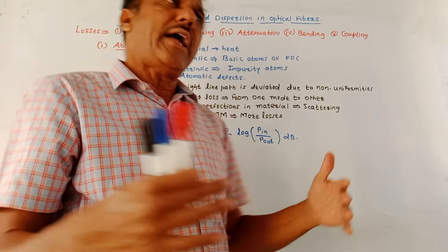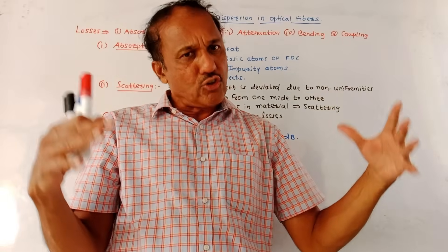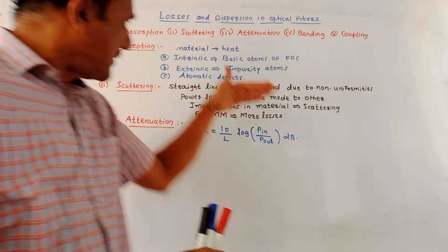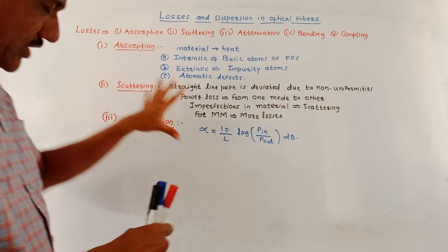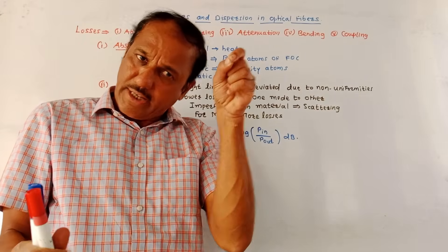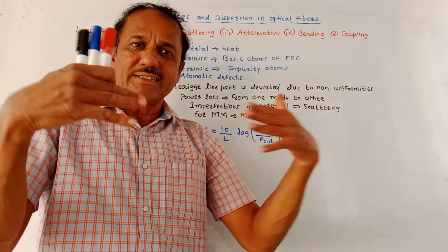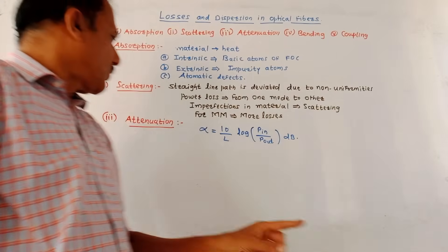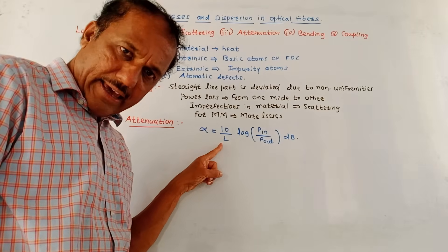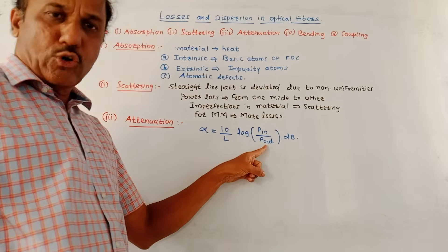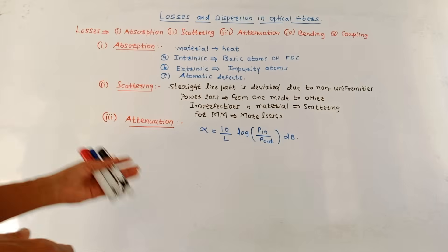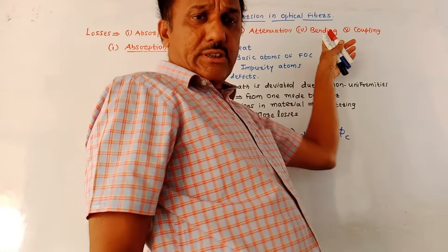Next is attenuation. In general, attenuation indicates the reduction in amplitude of a signal. In case of optical cables, attenuation is the reduction in light intensity. It is a combination of both absorption and scattering losses, which together reduce the light intensity. Attenuation is denoted by alpha and measured in dB. The formula is: alpha = (10 / L) · log(Pin / Pout), where L is the length of the optical cable, Pin is the input power, and Pout is the output power.